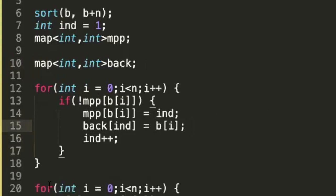was mapped to someone who was B of I. So if we have changed A of I, we know what it will be mapped to. Back of A of I will give you the number which previously existed.